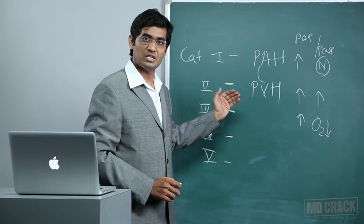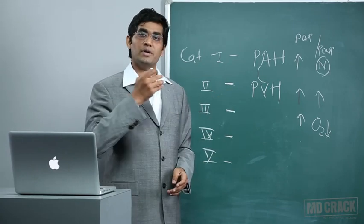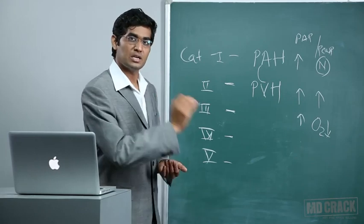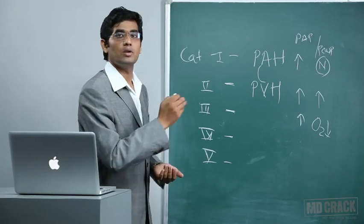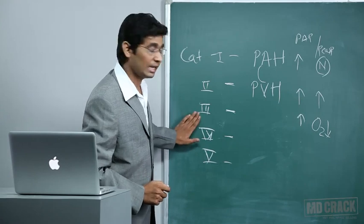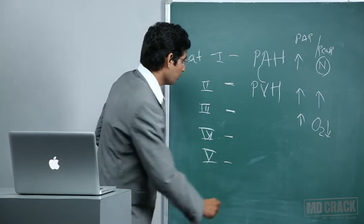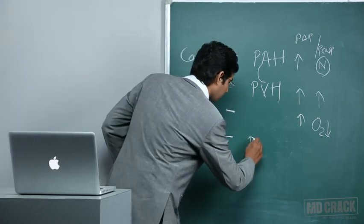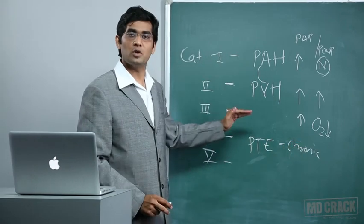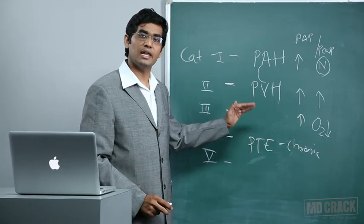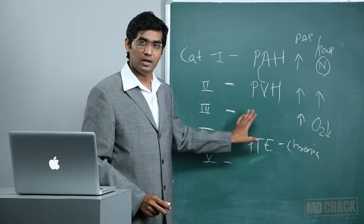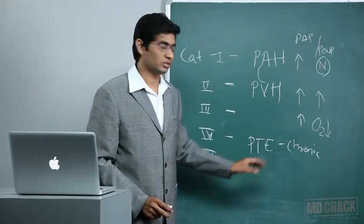Category 4 patients are those who have had chronic pulmonary embolism of more than three months' duration, which leads to pulmonary hypertension. Note that acute pulmonary embolism is unlikely to cause pulmonary hypertension — it must be chronic and of more than three months' duration.